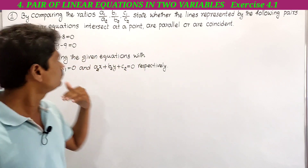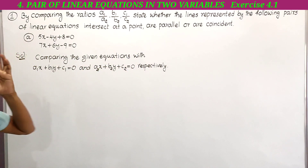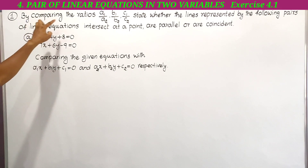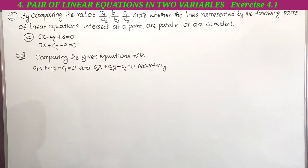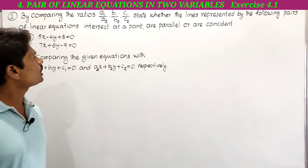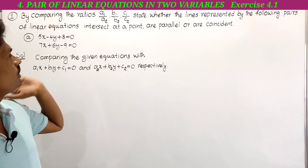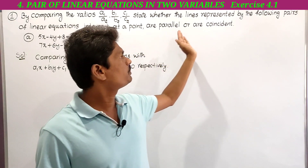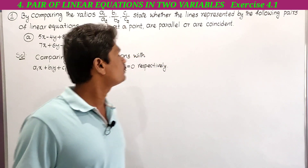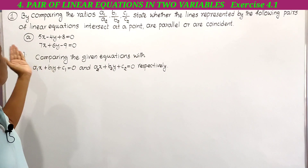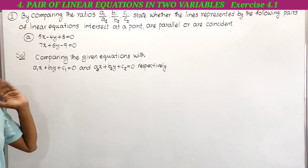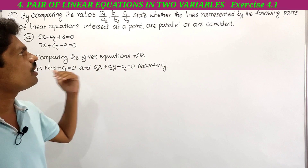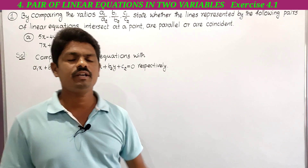Now see here what is given in the first problem. By comparing the ratios a1 by a2, b1 by b2, and c1 by c2, state whether the lines represented by the following pairs of linear equations intersect at a point, are parallel, or are coincident.